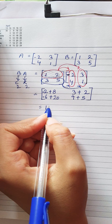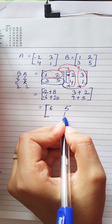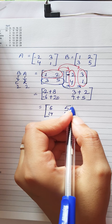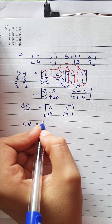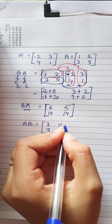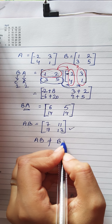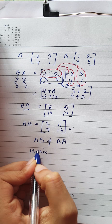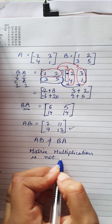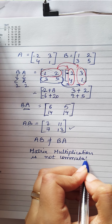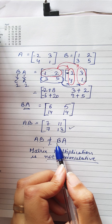After computing both products: A×B gives one result and B×A gives a different result — minus 2, 6, 5, 14 and so on. Comparing, A×B is not equal to B×A. That means matrix multiplication is not commutative. So in whichever order you are asked to multiply, you must multiply in exactly that order.